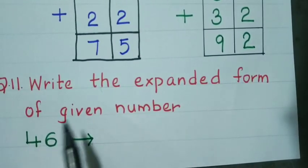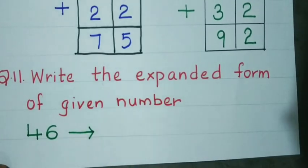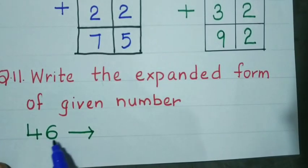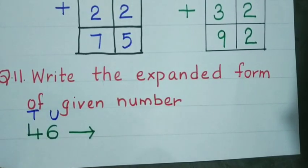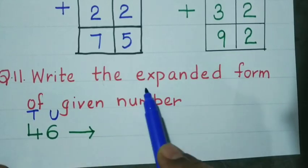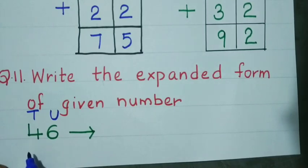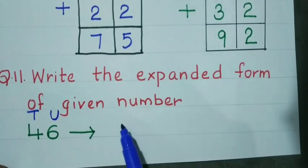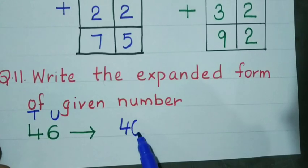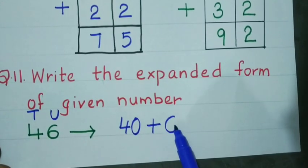Question number 11: Write the expanded form of the given number. The number given is 46. Write the places: units and tens. Expanded form means showing tens and units separately with a plus sign. 4 tens means 40, plus 6. So write 40 + 6.